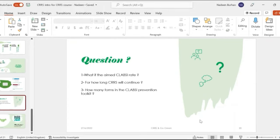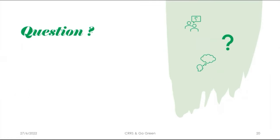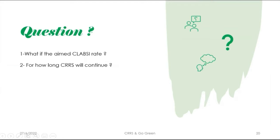The answer is 0.9. Excellent. And for how long will CRRS continue? The answer is three years. Excellent. How many forms are in the CLABSI Prevention Toolkit? The answer is 8. Excellent.